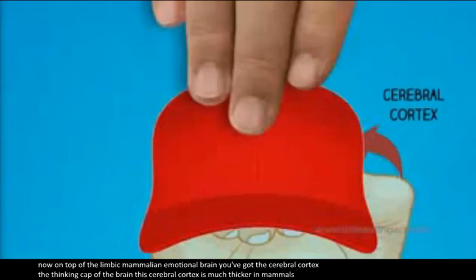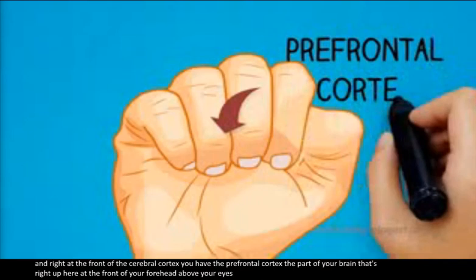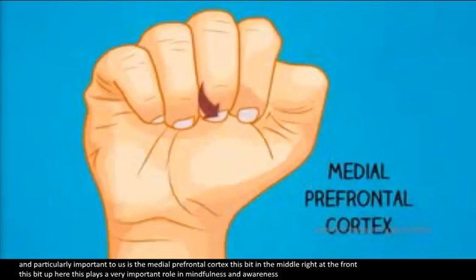On top of the limbic mammalian emotional brain, you have the cerebral cortex — the thinking cap of the brain. This is much thicker in mammals, especially in primates and particularly in human beings. The cerebral cortex is responsible for consciousness and cognition. At the front is the prefrontal cortex, and particularly important is the medial prefrontal cortex — this bit right in the middle at the front — which plays a very important role in mindfulness and awareness.